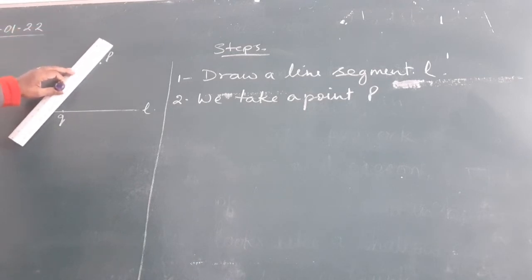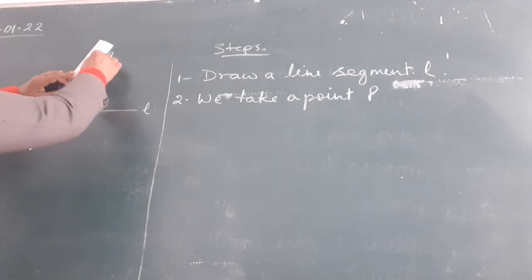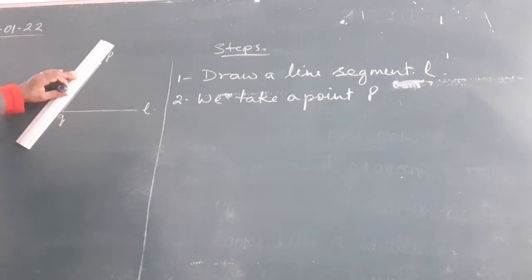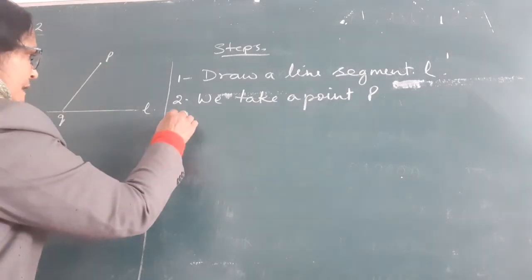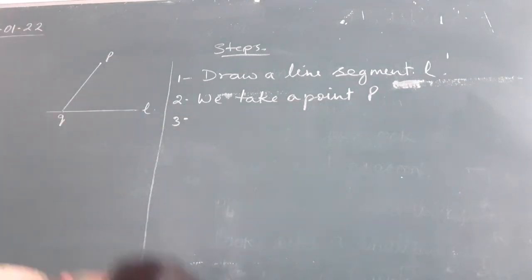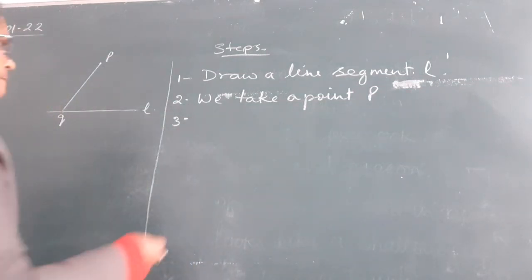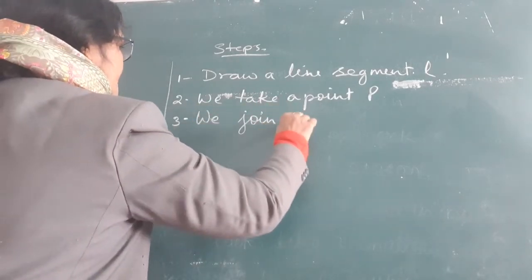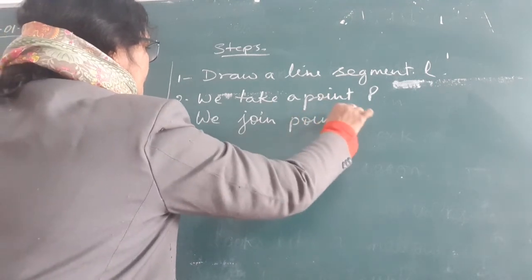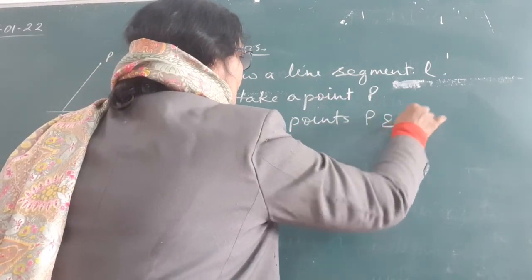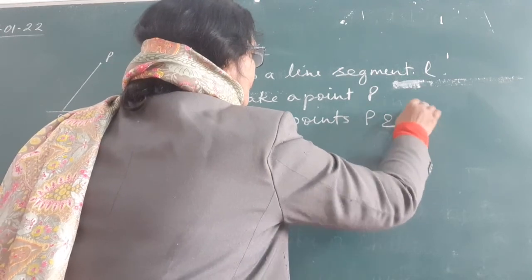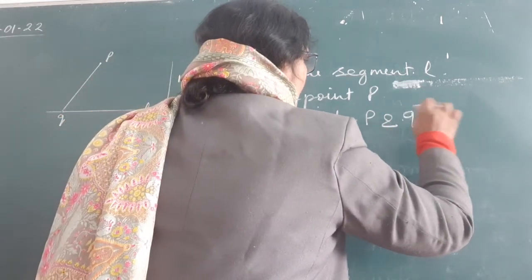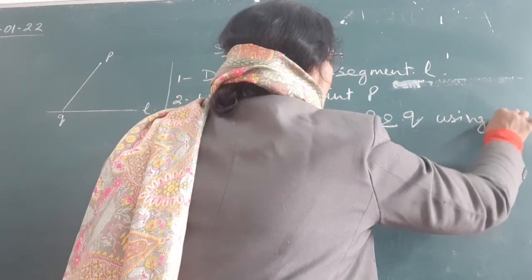we draw line segment P and Q using scale. So, here, I am joining the line. Line has been joined P and Q. I am also going to mention here. We draw line segment P and Q. We draw line PQ using ruler.